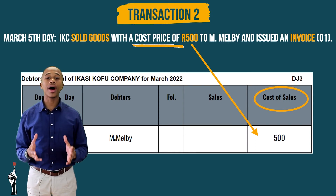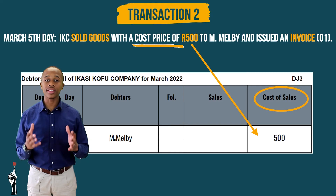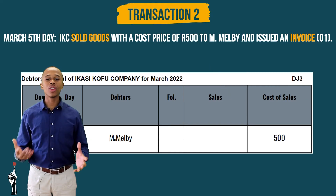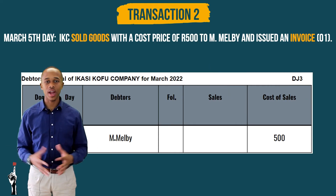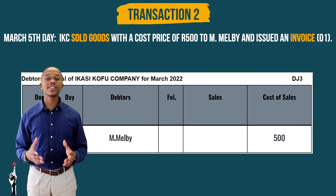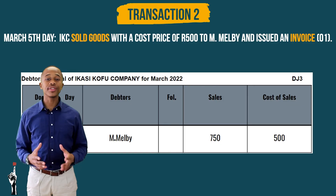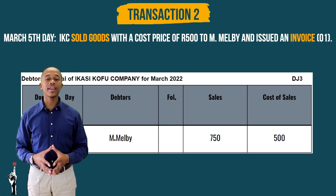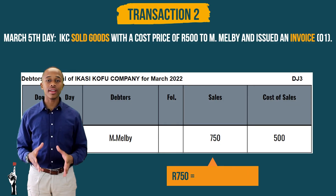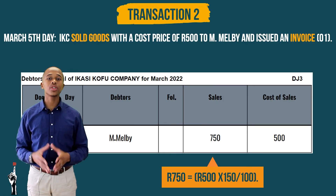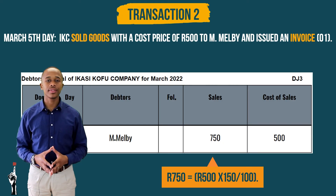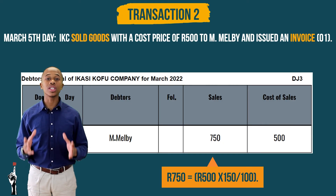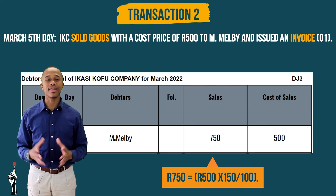Do you remember how to calculate the sales? If not, please revisit Term 1, Lesson 1. The sales is 750 Rand — that is 500 Rand times 150 divided by 100, which equals 750 Rand.